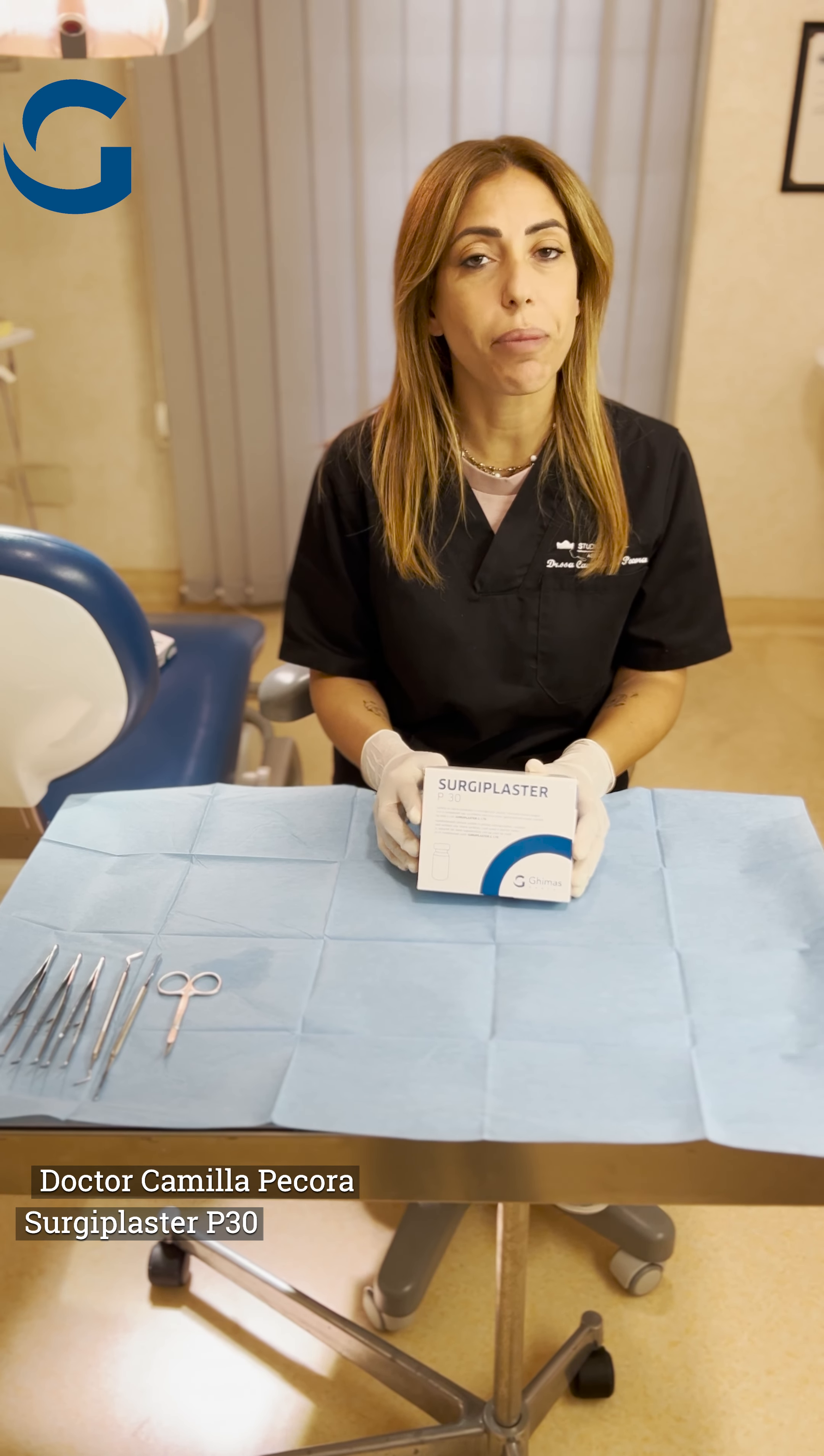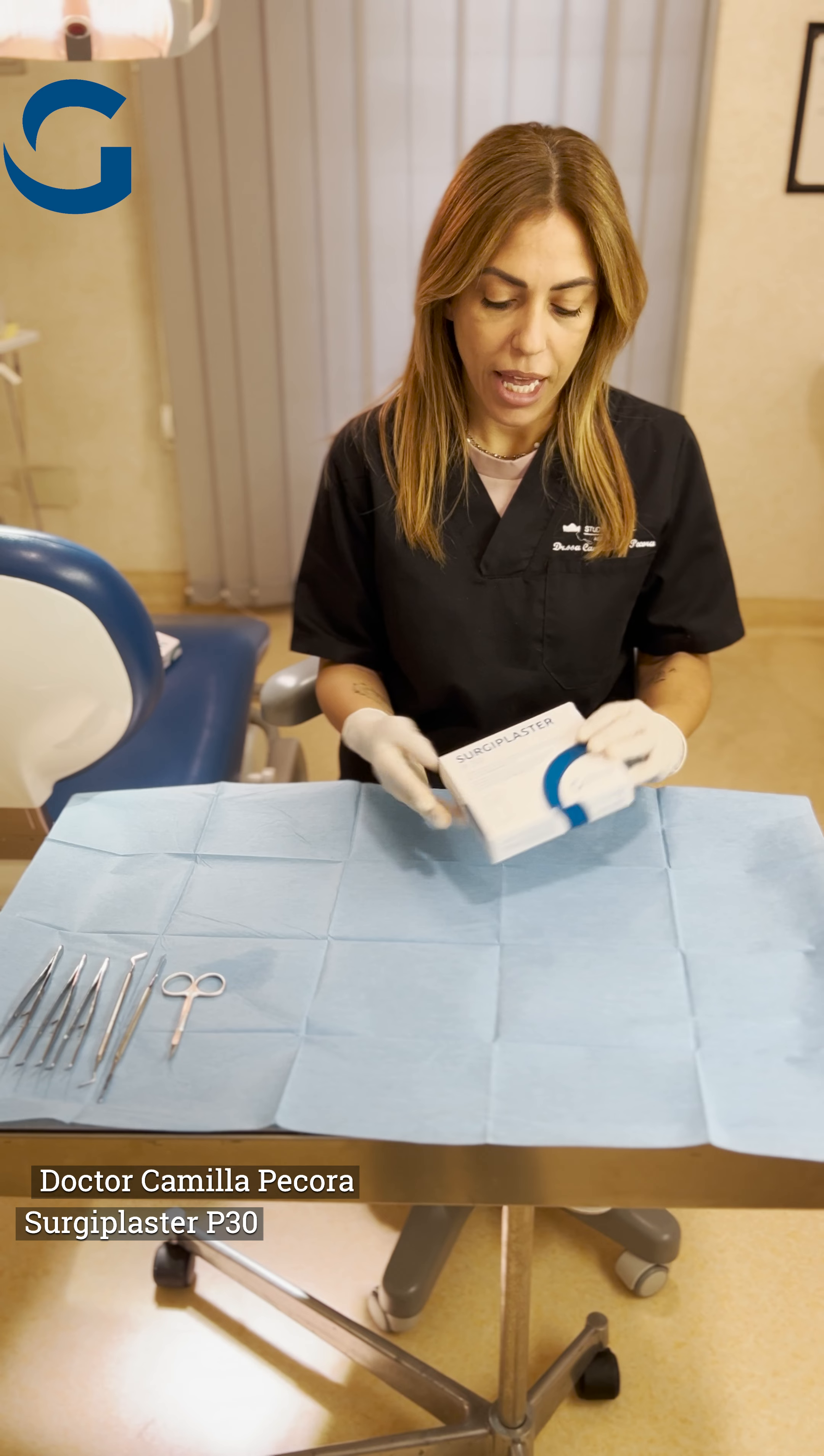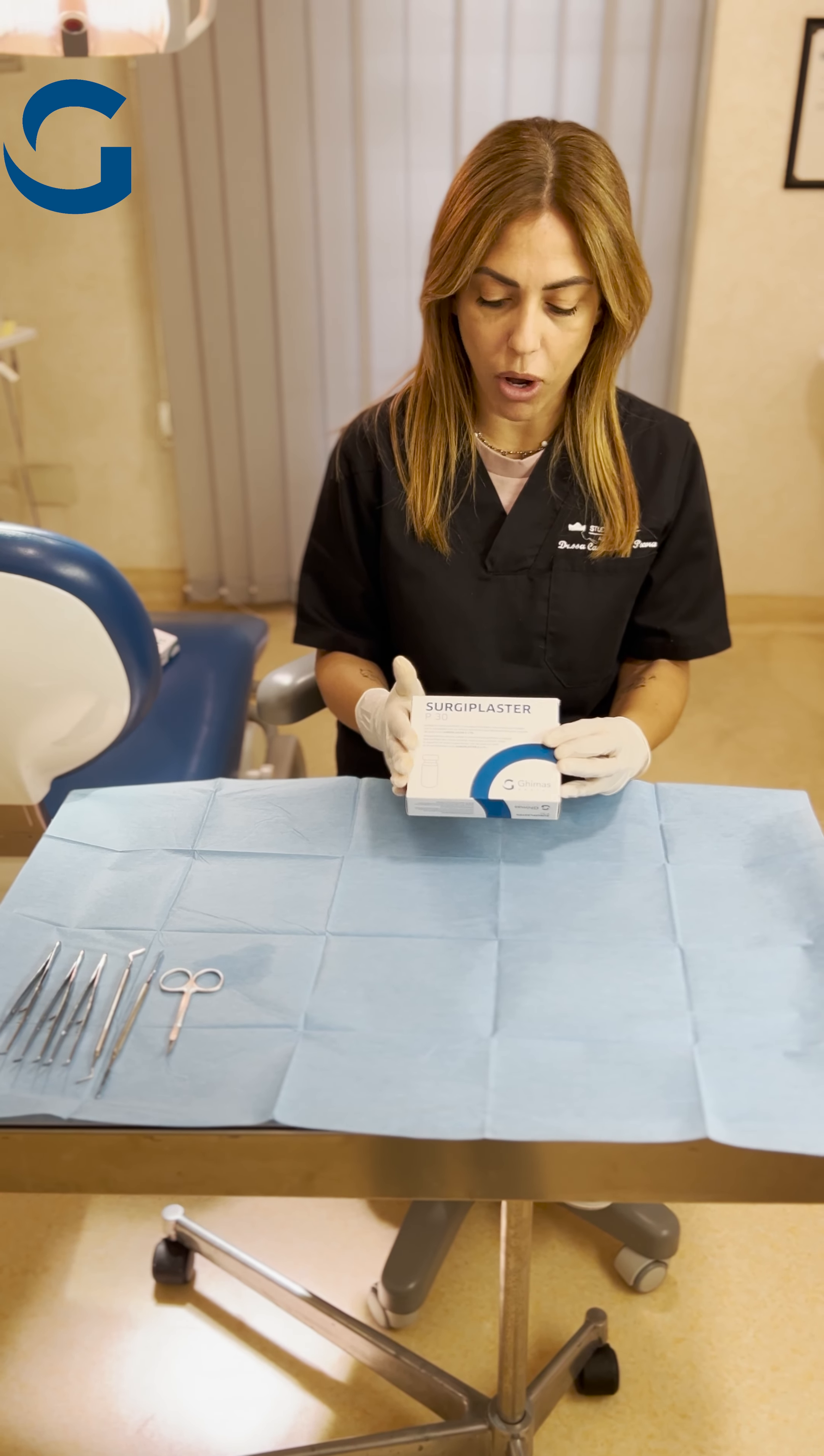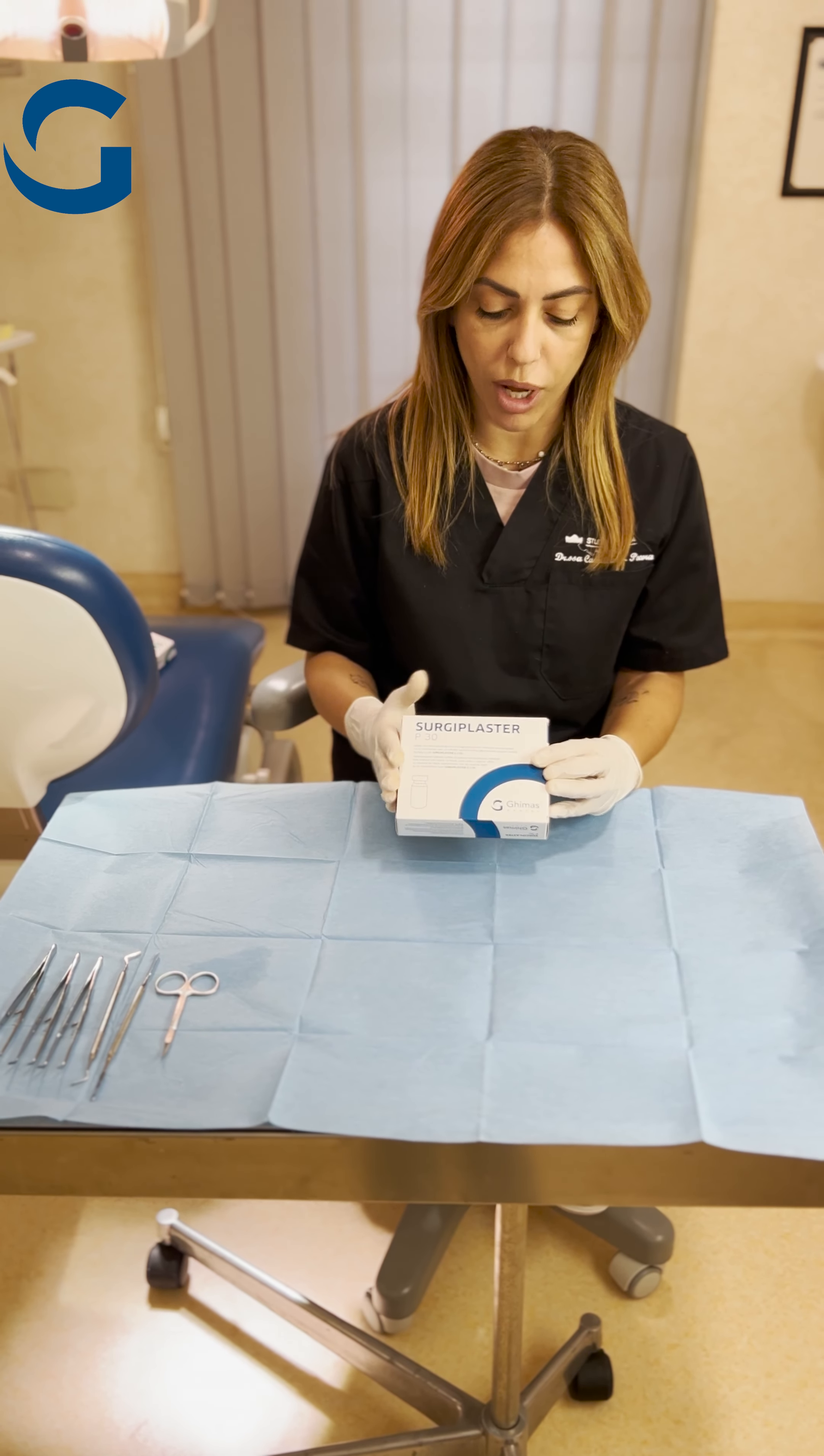Today we're going to talk about the Surgiplaster P30. This is the smallest granulometry and this is the color code that you have on the outside box so you can identify it very nicely. This is the blue one.